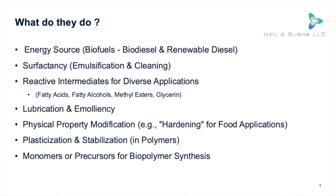Physical property modification refers primarily to the hydrogenation of unsaturated vegetable oils to produce semi-solid or solid fats. This process modifies melting point, texture, and so on — a pretty big area covering margarine, shortenings, confectionery, and more.